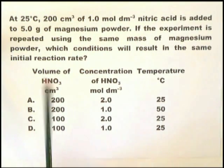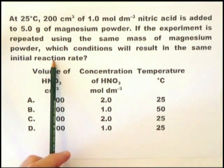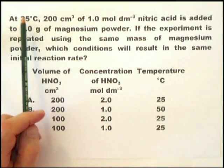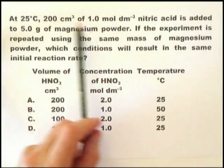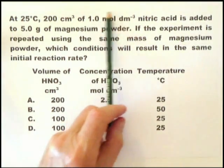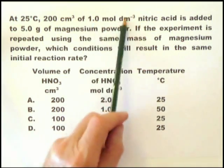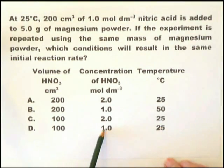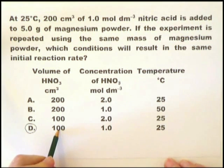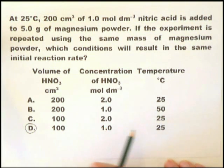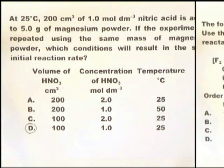As soon as you read this and you see which conditions will result in the same initial reaction rate, there are two things you've got to do. You've got to have the same temperature, therefore it can only be A, C or D. And secondly, it must have the same concentration of nitric acid. The volume is less important, it must have the same concentration. The answer must be D.